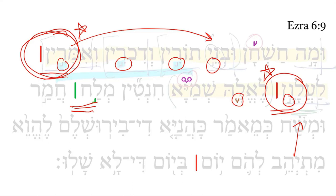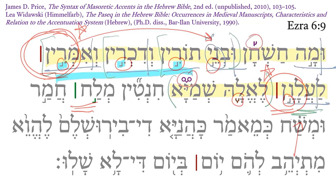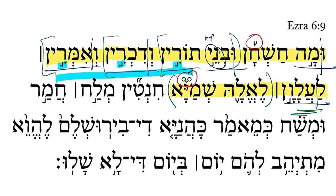So we have three conclusive proofs that the Masoretes were right in designating the vertical strokes to be Pasek. Some documentation on this can be found in Price's discussion of the Pseudo LeGarmeh in the Syntax of Masoretic Accents in the Hebrew Bible. I also confirmed this analysis with Leah Himmelfarb of Bar-Ilan University, who wrote her dissertation on the Pasek. Now, all that having been said, we're ready to continue with our reading of Ezra 6-9.